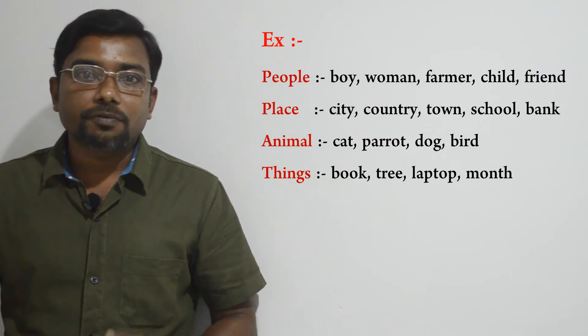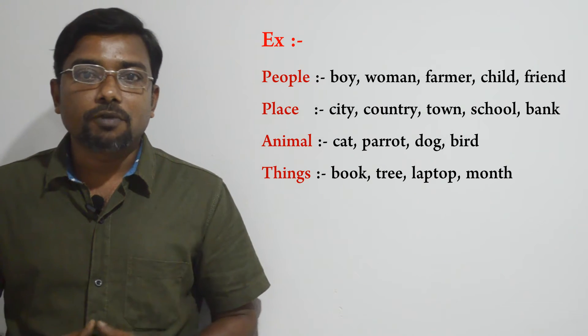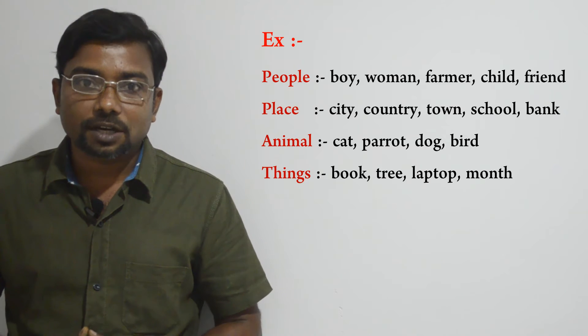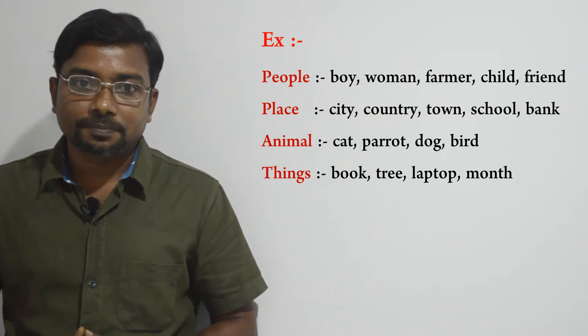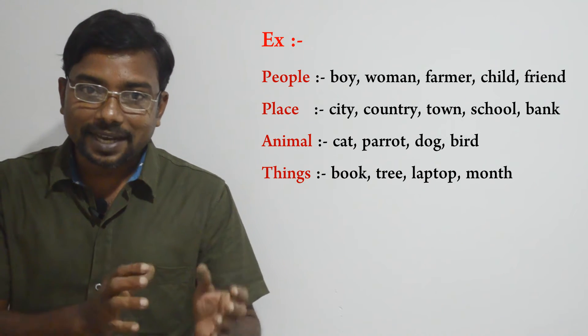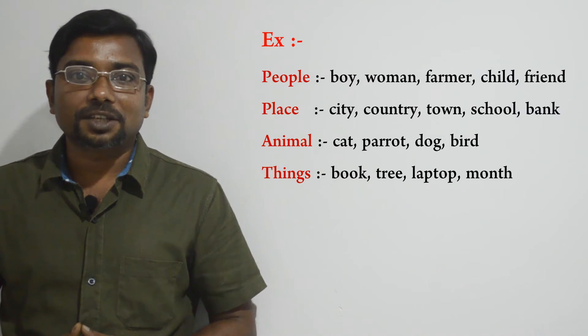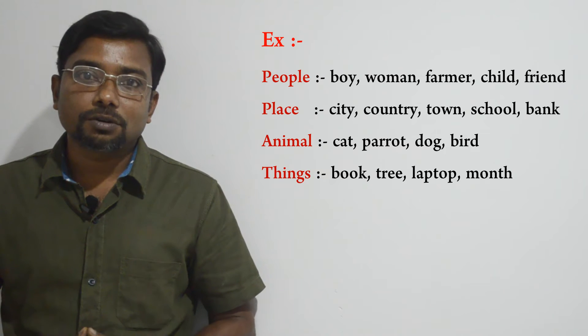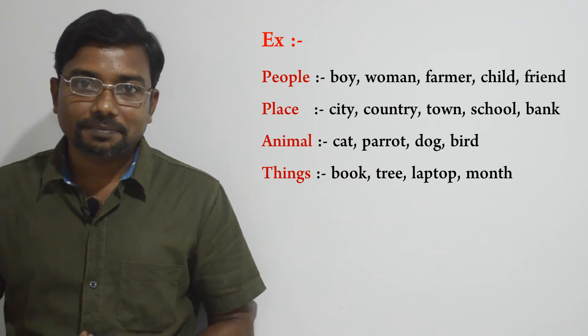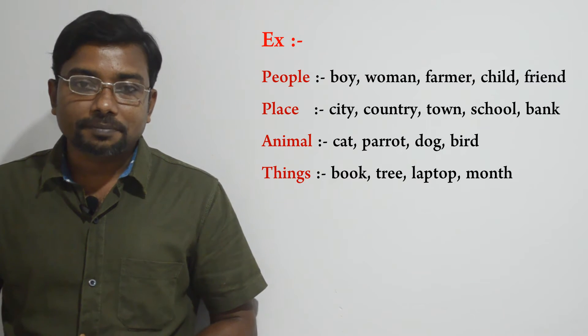Let's look at more examples to identify common nouns. To indicate people we can use: boy, woman, farmer, child, friend as a common noun. And also to indicate places we can use: city, country, town, school, bank as a common noun.